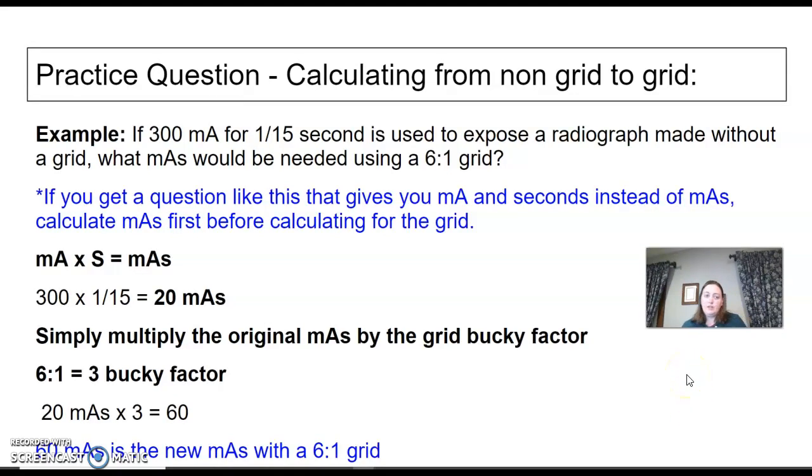Non-grid to grid, another example here. The only difference with this one is if you notice in the beginning of this question, it's giving me 300 mA and 1/15th of a second used to expose a radiograph made without a grid, but now it wants me to figure out the new mAs with a 6 to 1 grid. I want you to do a hard stop here because you have to figure out your mAs first. If it's giving you mA and second separately, you've got to calculate those first before moving on. mA times time equals mAs. These together give me 20 mAs. You're going to multiply that original mAs now by the bucky factor. We are going to multiply the 20 mAs by 3 because a 6 to 1 is a 3 for a factor, and that gives me 60. 60 is the new mAs that I will use with a 6 to 1 grid instead of the 20 with non-grid.